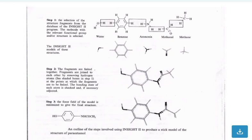You have the secondary structure that you can combine together. Then the force field of the model is minimized to give the final structure you can see. An outline of the steps involved using INSIGHT to produce a stick model of the structure.